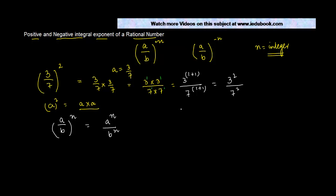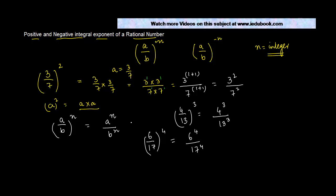Similarly, 4 upon 13 to the power 3 can be written as 4 to the power 3 divided by 13 to the power 3. And 6 upon 17 to the power 4 would mean 6 to the power 4 divided by 17 to the power 4. If any number is negative it doesn't make a difference — minus 6 upon 17 to the power 3 equals minus 6 to the power 3 divided by 17 to the power 3.